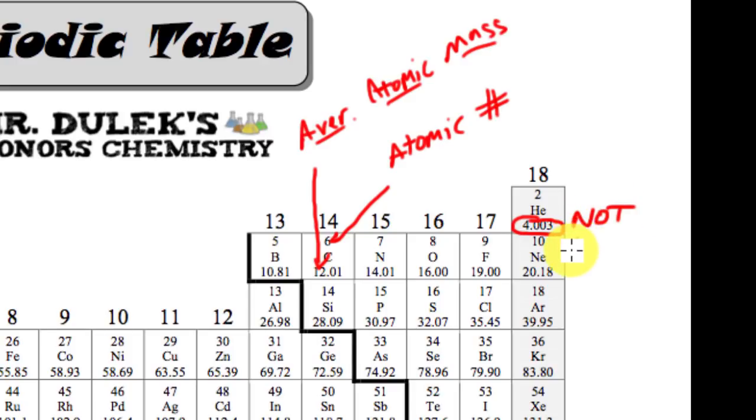Not. I get this all the time. Students think that's the mass number. I'm assuming that's coming from some previous class you might have had, but it is not. It's the average atomic mass. So what that means is we're going to take the average of something.